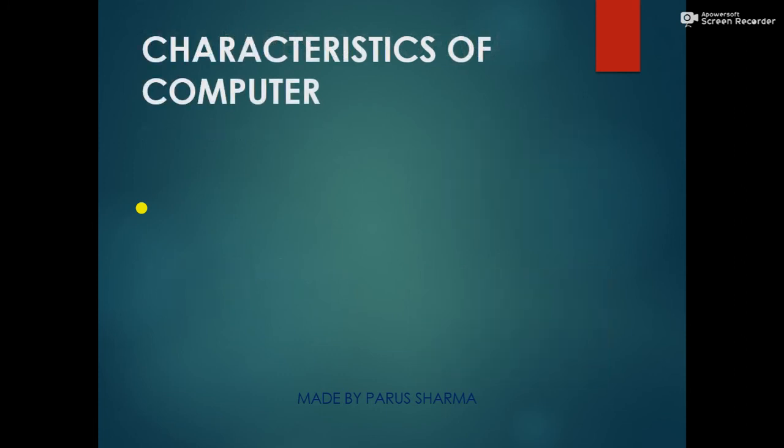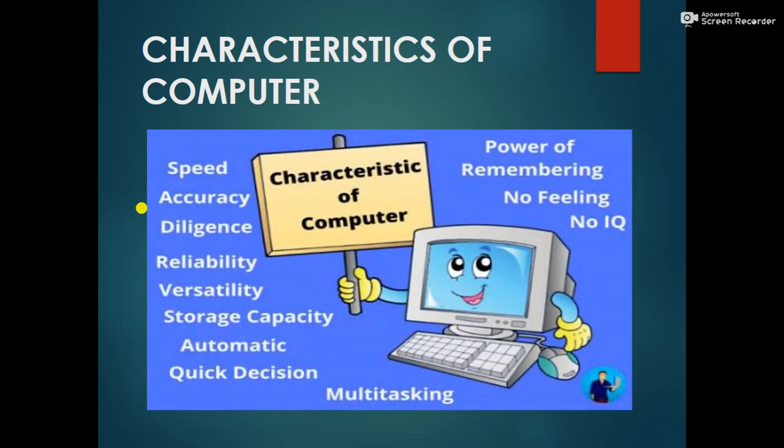There are also characteristics of a computer — the qualities that explain why we use computers. These include speed, accuracy, diligence, reliability, versatility, storage capacity, being automatic, good decision-making, and multitasking. However, it also has two drawbacks: it has no feelings and no IQ.